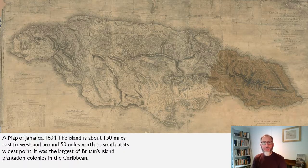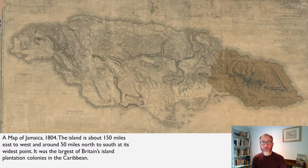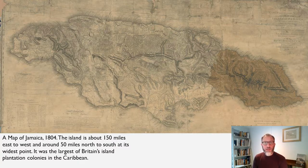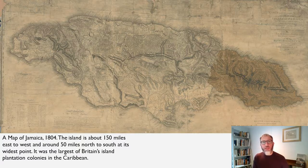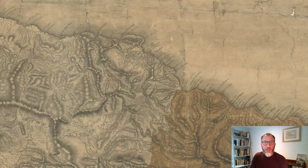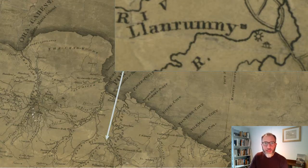Here we see a map of Jamaica, which was the single most important plantation colony — the most important colony full stop — in the British Empire during the 18th century. You can see the names of sugar estates around the edges of the island. Most of them were on the low-lying coastal plains where some of the most fertile land for sugar existed, and where proximity to the coast allowed sugar to be quickly transported and loaded onto ships for export. Among those plantations is Lanrumny — the estate we started with in that colourful picture by James Haqueville.